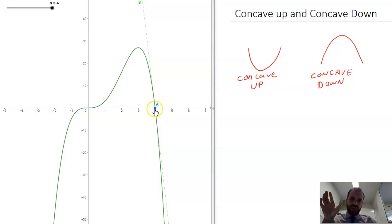While you're considering that, you might wonder, why have I put a little point A here with a little tangent line hanging off it? What's that going to do? What's that got to do with concave up and concave down?